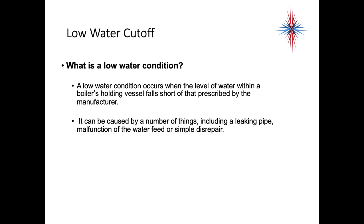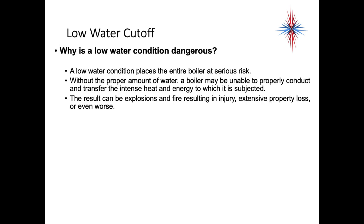So what is a low water condition? A low water condition occurs when the level of water within the boiler falls short of a pre-described level set by the manufacturer. It can be caused by a number of things including a leaking pipe, malfunction of the water feed, or simply disrepair of a system. Regardless of the cause, we cannot operate a boiler if the water level is below a certain point in the system.